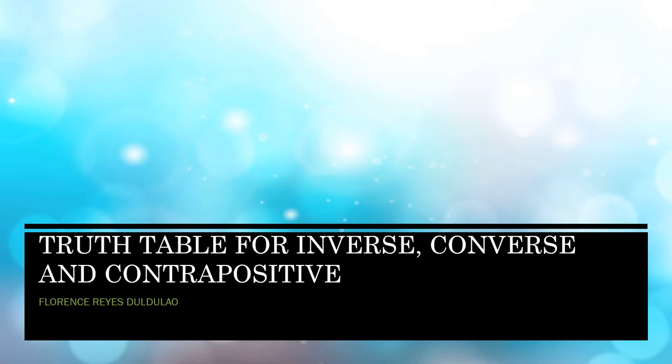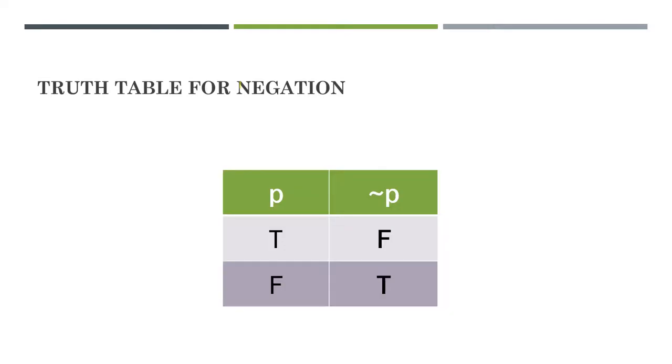A truth table is a chart of rows and columns which shows the true values. We will be using T for true and F for false of every possible combination of a given statement. Now let's take a look at the simplest truth table that we have.